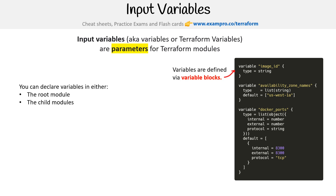The way you define them is via the variables block at the top. Going over the possible fields for that block, we have the default option. The default option is going to be the default variable value if you do not set it.